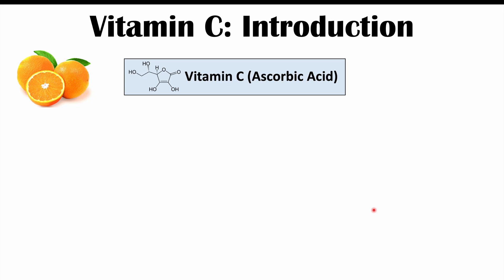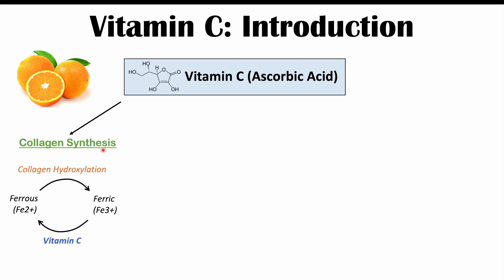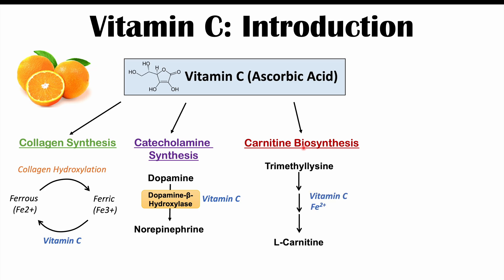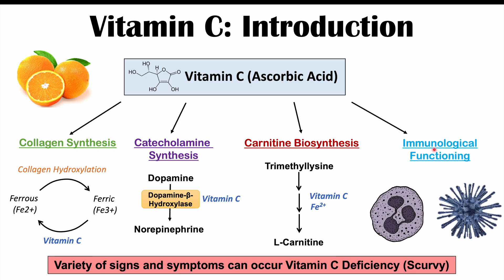Vitamin C is very important because it is required for many different processes in the body. These can include collagen synthesis — collagen is that very important, abundant protein classically found in the skin but in many different parts of the body. Vitamin C is also important in the synthesis of keratin, that very strong, hard protein found in hair and nails. It is important in catecholamine synthesis — like norepinephrine and epinephrine — carnitine biosynthesis, which is important in fatty acid metabolism, and immunological functioning. A vitamin C deficiency is what we would call scurvy.